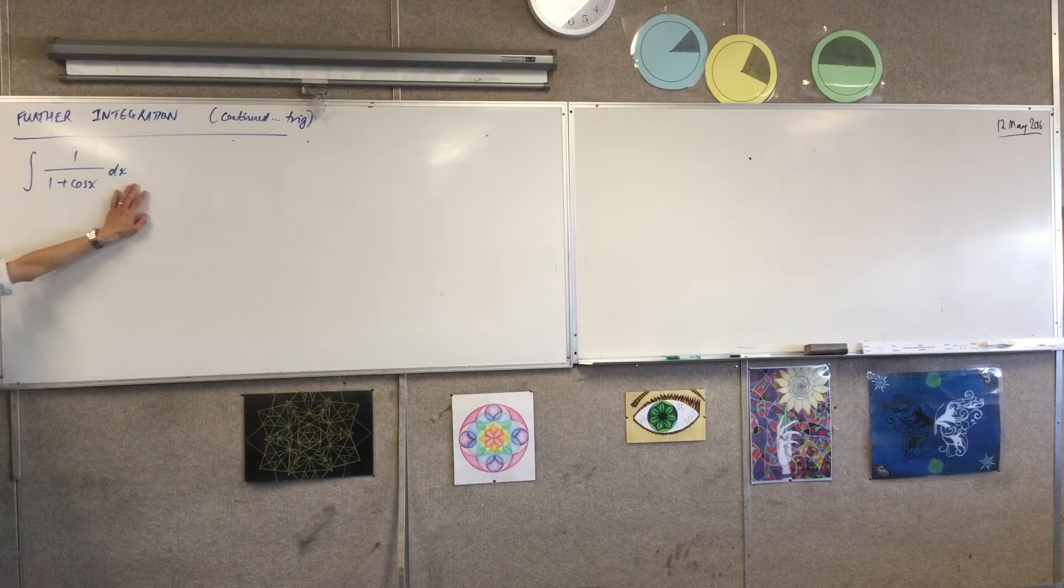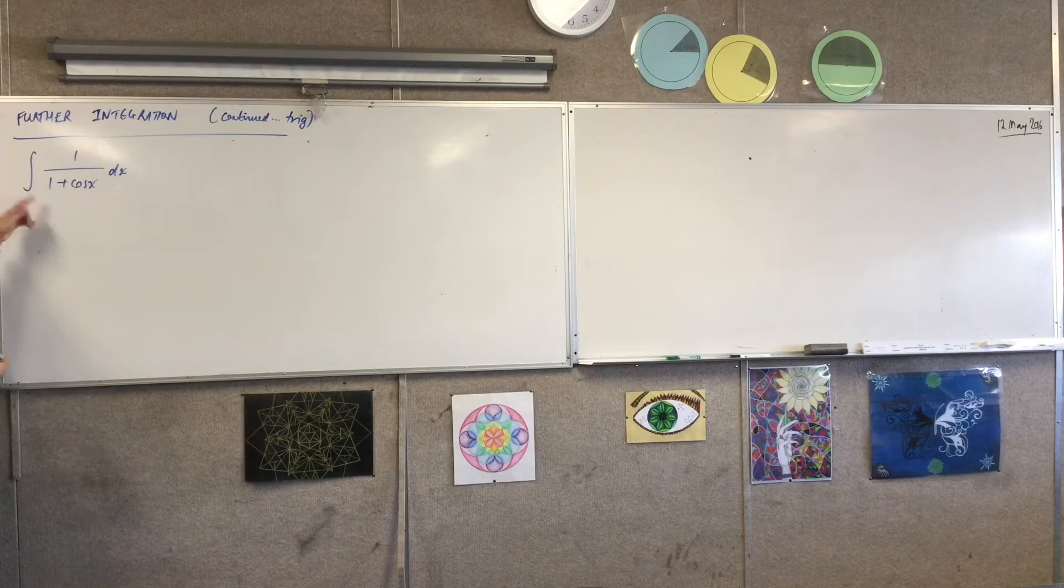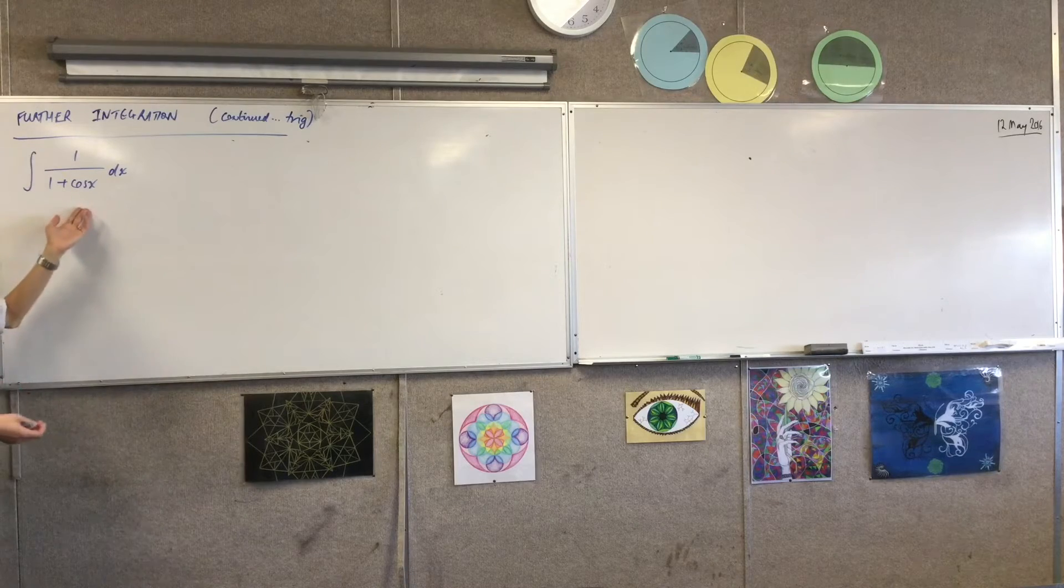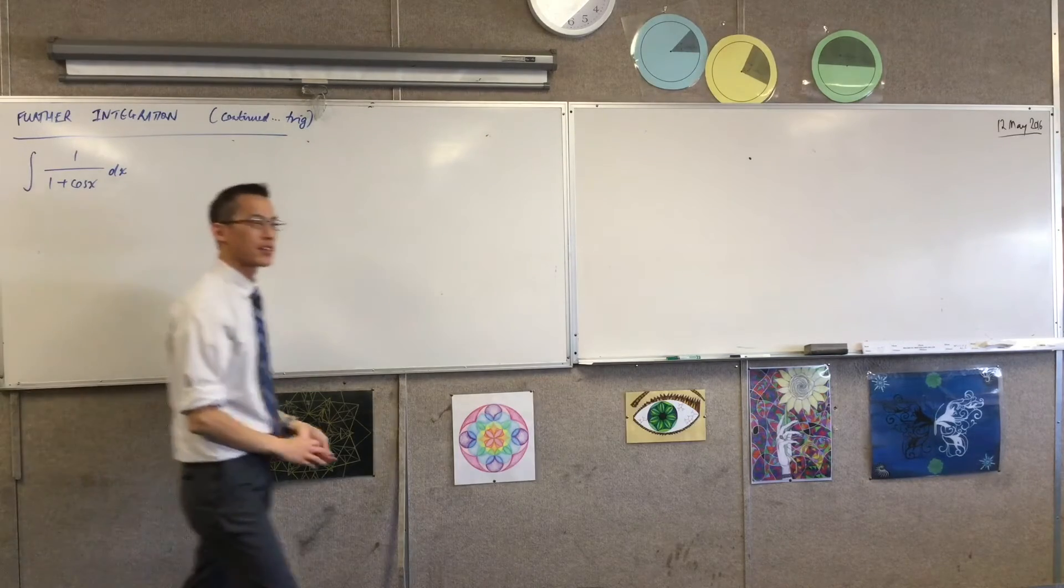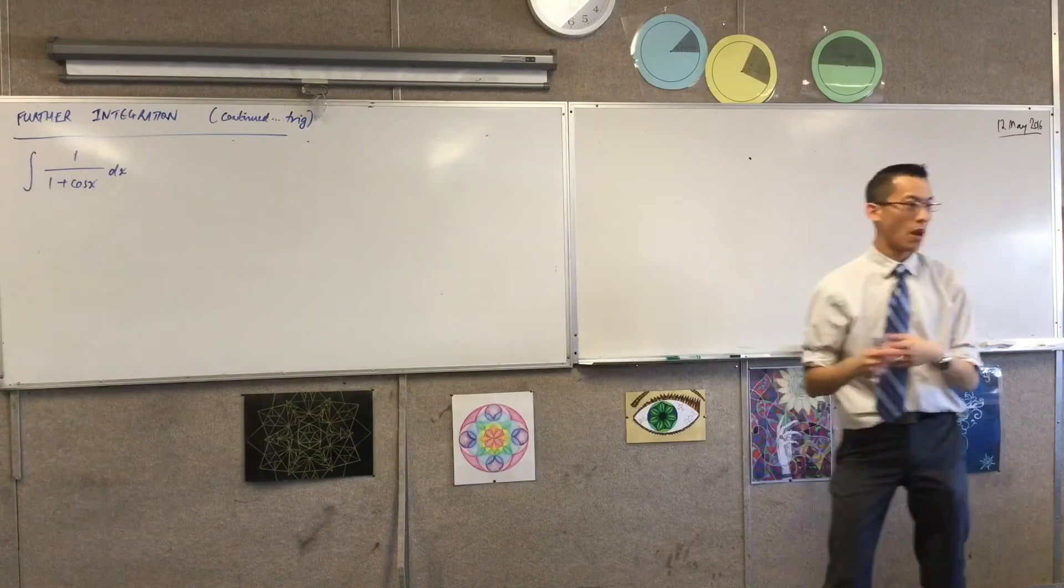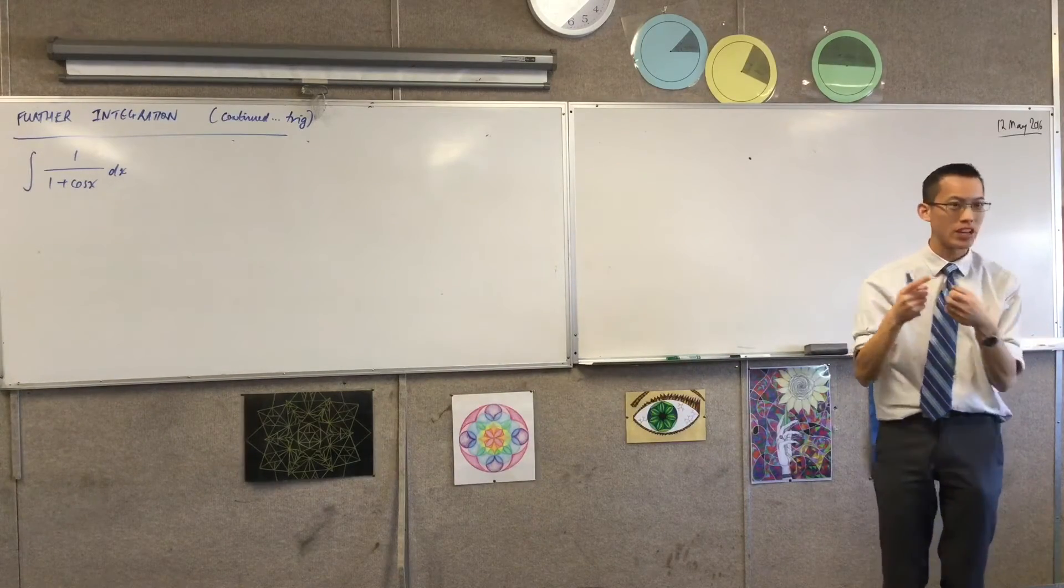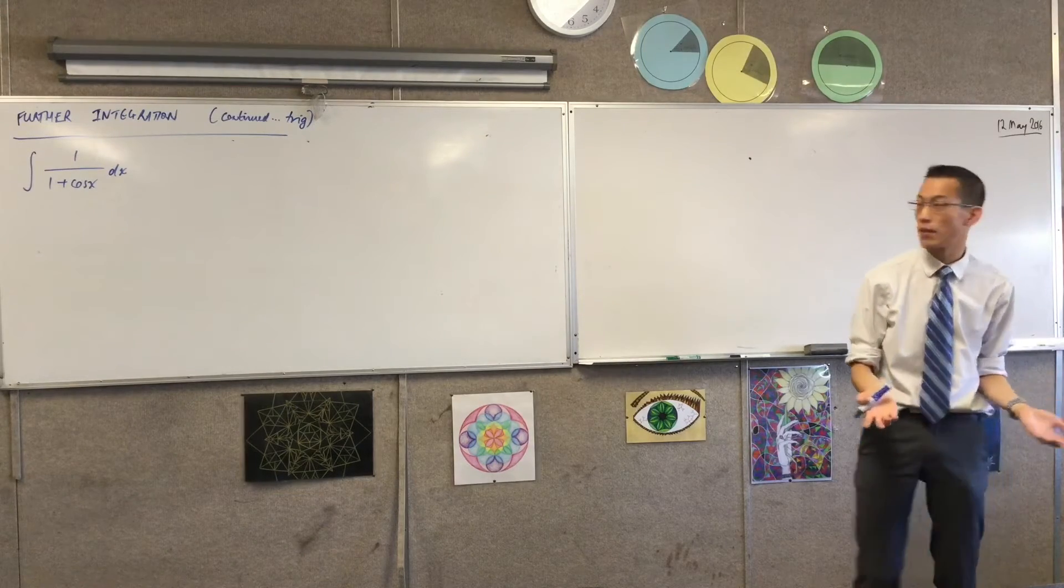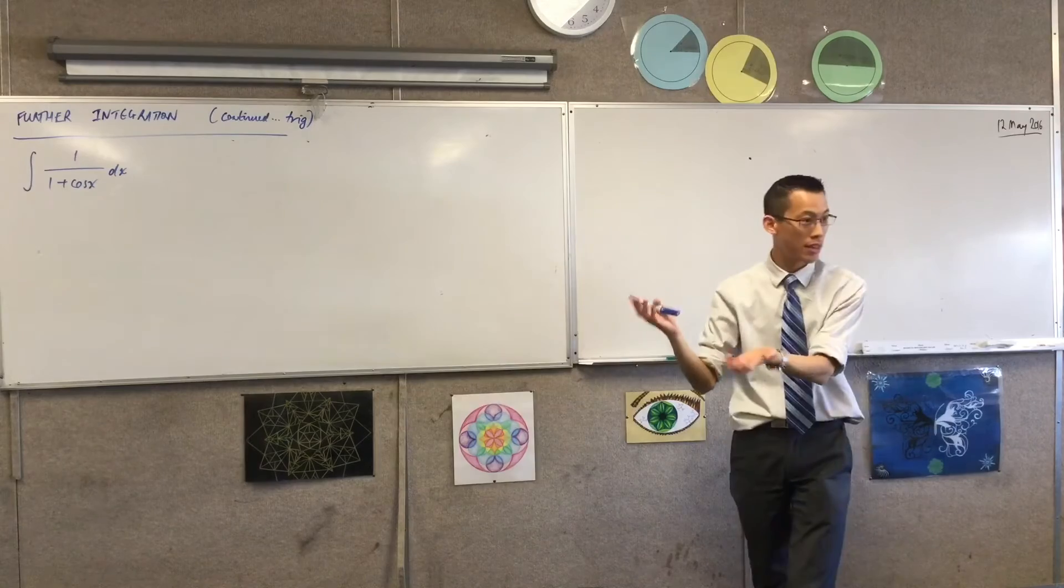A substitution might be let u equal 1 plus cos x, or let u equal just cos x by itself. That ends up being problematic though, because if we're expecting such a substitution, when we change the variable of integration, what are we going to introduce? We're going to introduce a sine, right? Because you need the derivative of that cos, and I don't see it anywhere there.